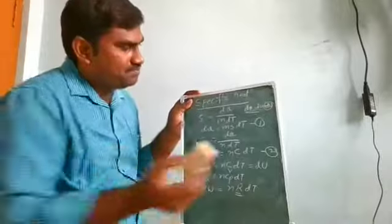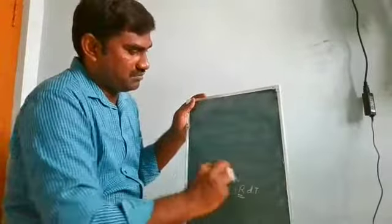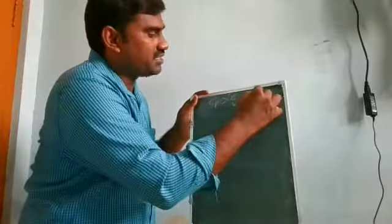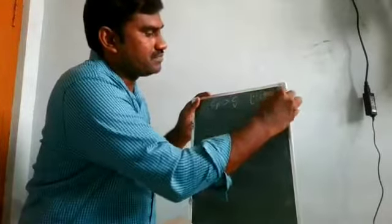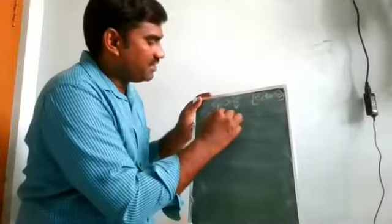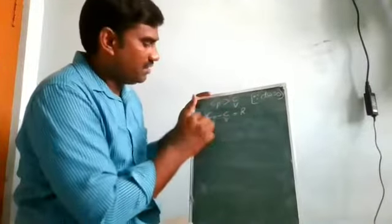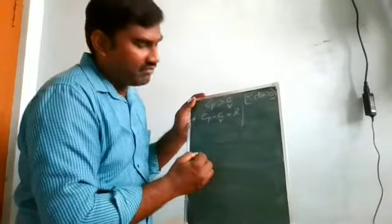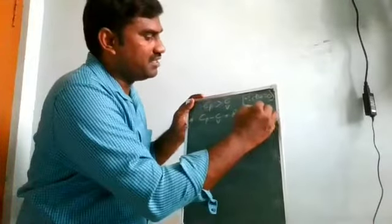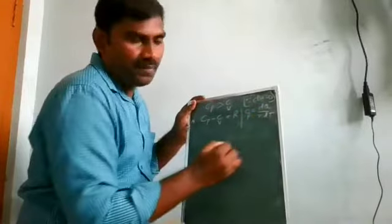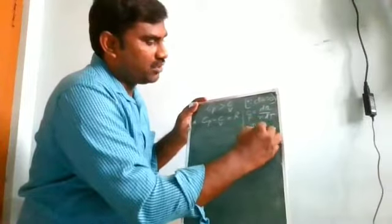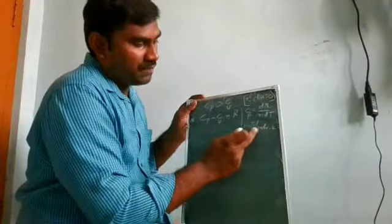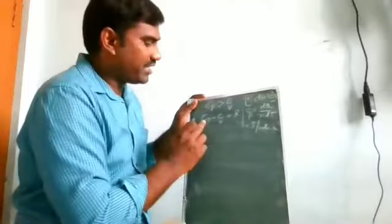We now discuss Mayer's formula. Cp is greater than Cv because at constant volume dV equals 0, so no work is done. From this we derive Cp minus Cv equals R. This is Mayer's formula. This equation is valid for one mole of a gas when Cp and Cv are expressed in joules per mole per Kelvin.